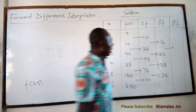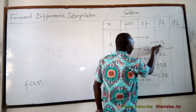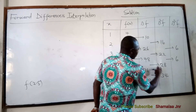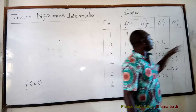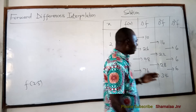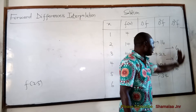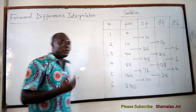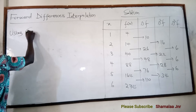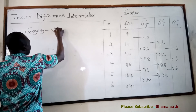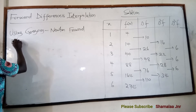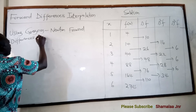Now let's look at the third forward differences. We get 22 minus 16 equals 6, then 28 minus 22 equals 6, and 34 minus 28 equals 6. Because we are getting a constant value, and if we continued the fourth differences would be 0, we stop here. This means we can use the Gregory-Newton forward differences formula.